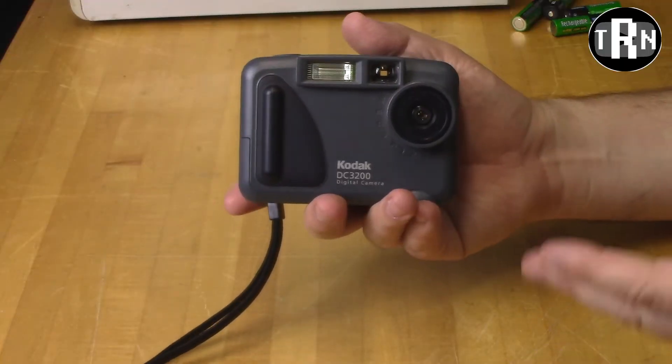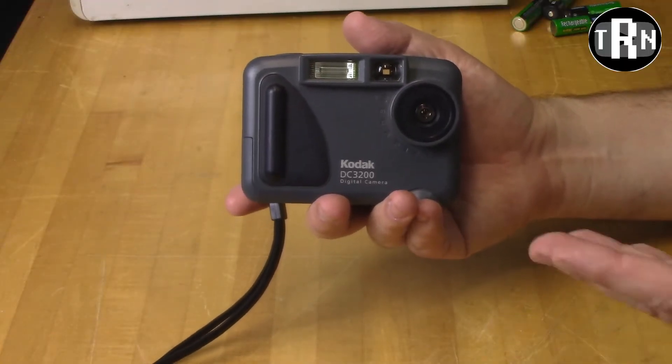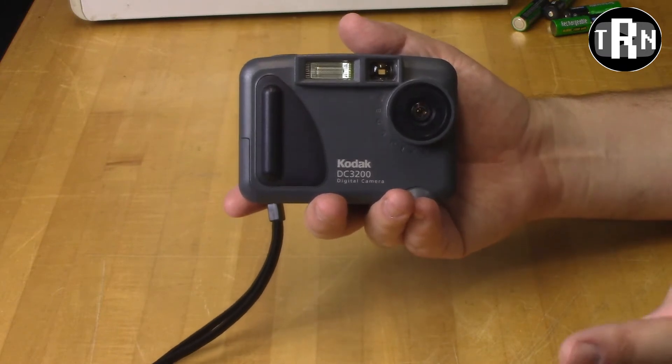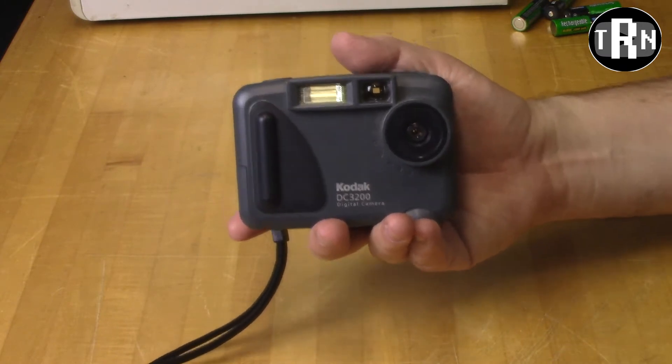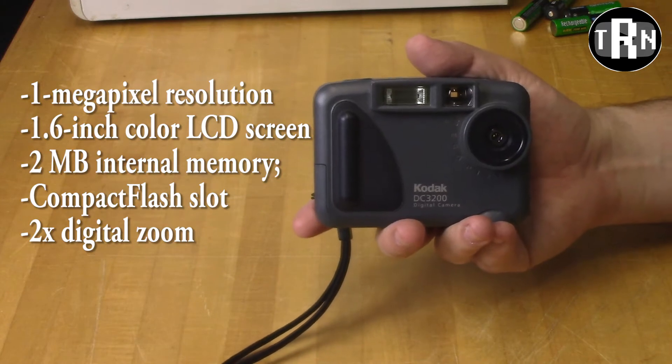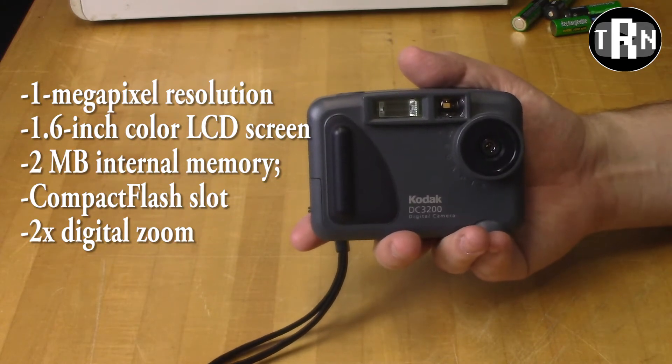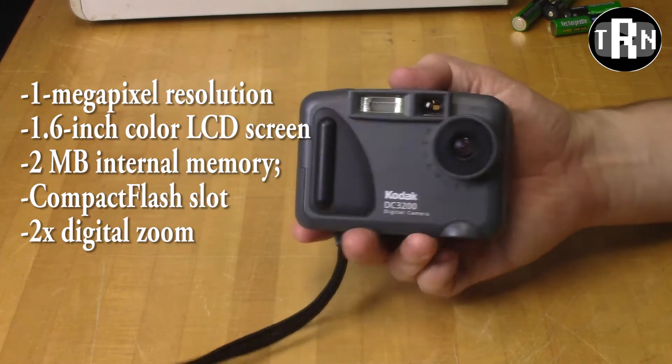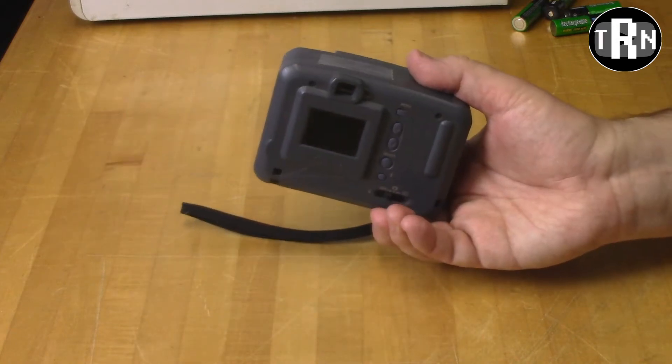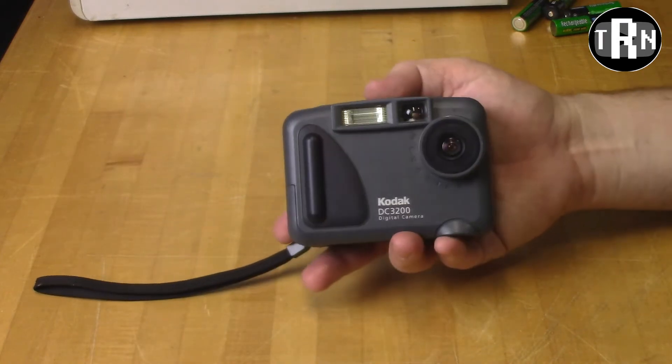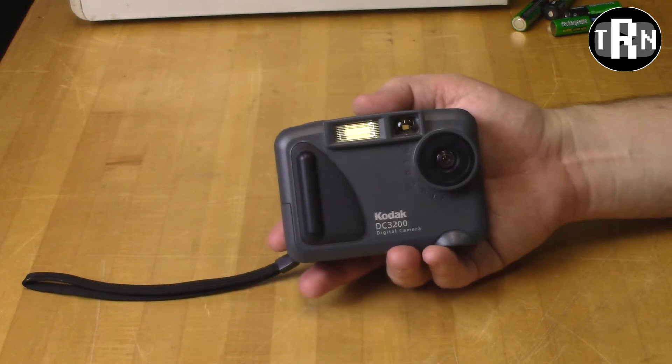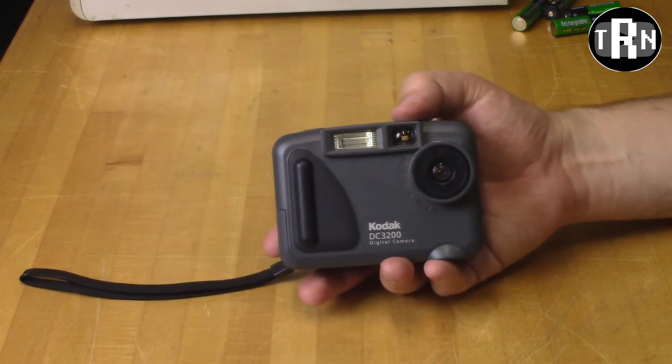And here it is at the table. This is the Kodak DC3200 1 megapixel digital camera. I'm going to put the specs right there that I got online. This has a 1.6 inch LCD on the back, a 1 megapixel sensor, fixed focus, has flash on it, and a built-in optical viewfinder.